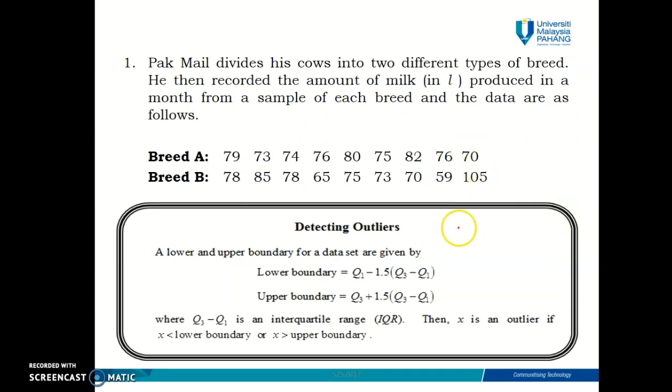So before we go and calculate the outliers, I mean the lower and upper boundary for each data set, why don't you have a look at both data and then try to figure out, do you think there is any outlier in breed A? Okay, so just keep that to yourself. And what about breed B? Do you think there exists any outlier in breed B? Well, perhaps 105 seems like an outlier because it's like extremely large from the rest of the data.